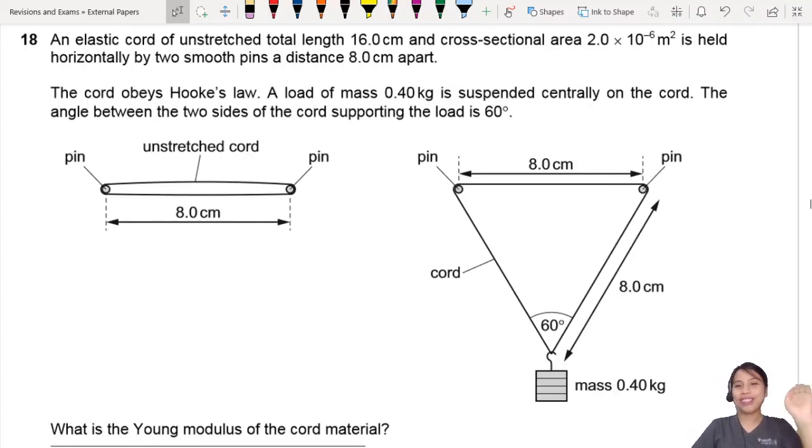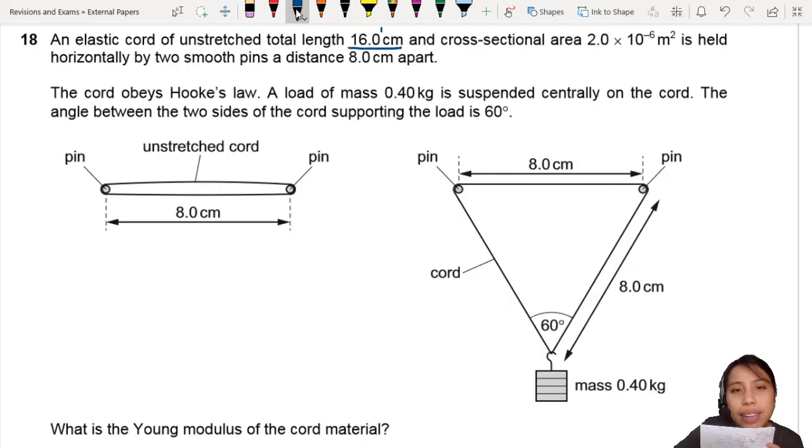This question is very interesting and quite original. You have an elastic cord and you hang something on it. This elastic cord has a total unstretched length L0, cross-sectional area A.